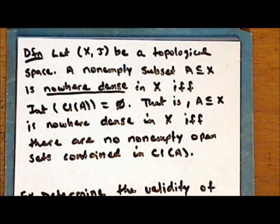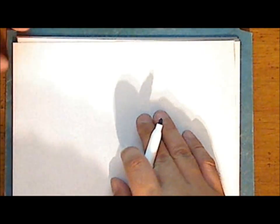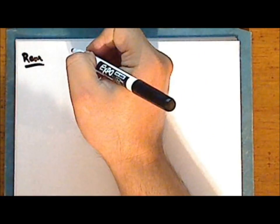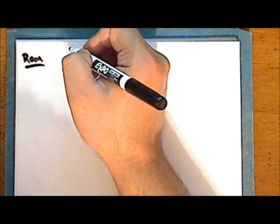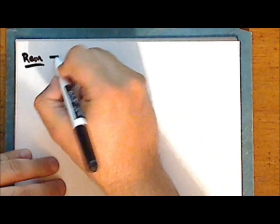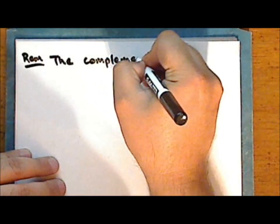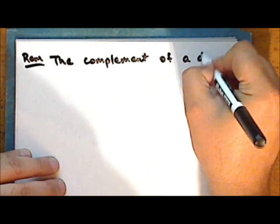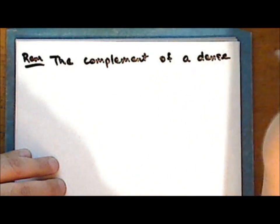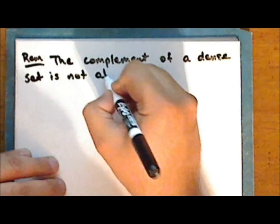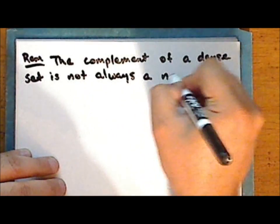Now in topology, many of the related concepts that we encounter are not true opposites — rather they are complements of one another. Now in the case of dense and nowhere dense subsets, this is not exactly true. The complement of a dense set is not always a nowhere dense set.